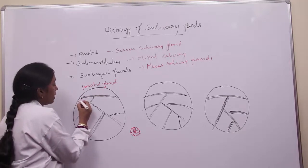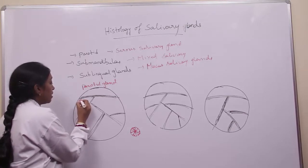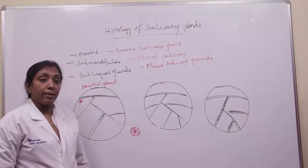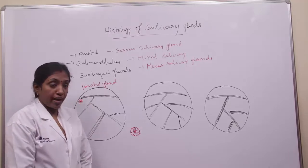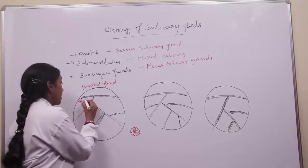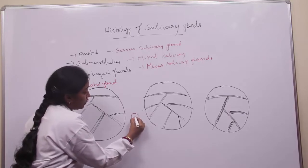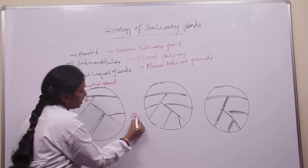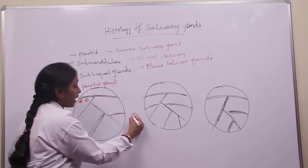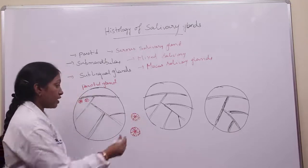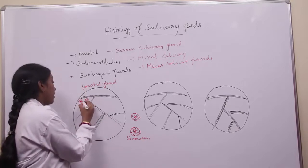The parotid gland is a serous salivary gland — it consists of more number of serous acini, the lumen is very small, the cells are triangular in shape, the nucleus is situated at the base, and the apex of the cell consists of more number of zymogen granules. More number of serous acini are seen in the parotid gland.